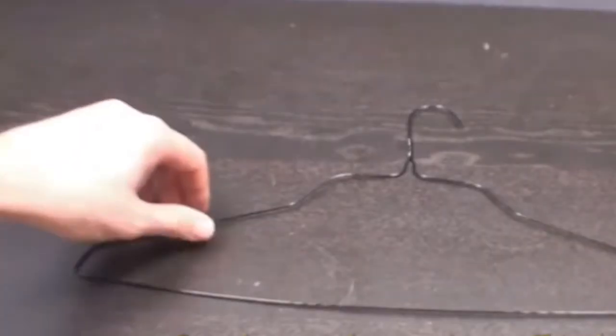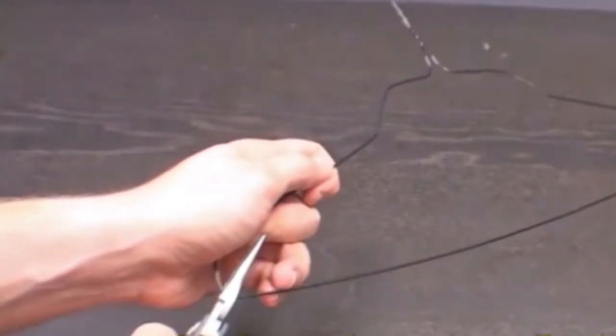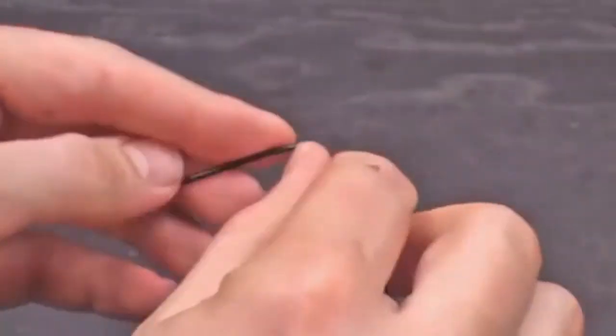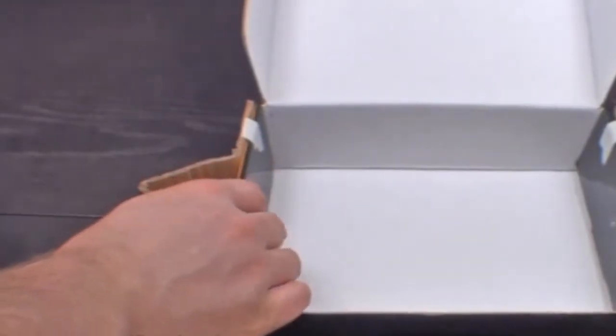Take the coat hanger and cut it into a seven inch piece and a ten and a half inch piece. Bend the ten and a half inch piece into a crank. Push the wire hanger pieces through the peaks of the corrugated cardboard and the box.